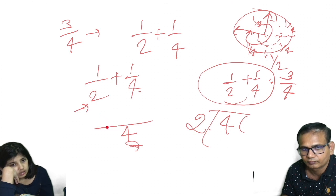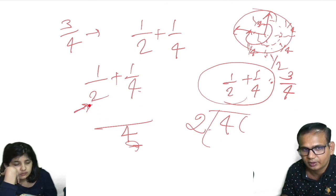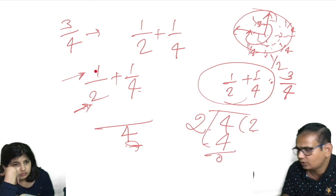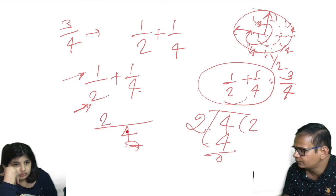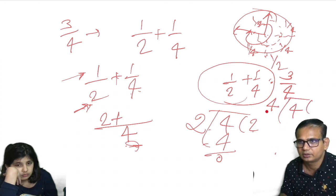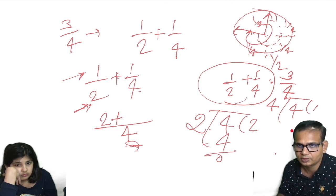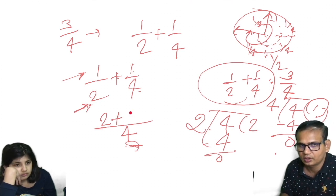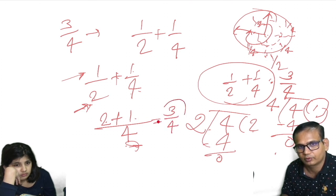We keep two here, then one here. Then two plus one is three, and three by four. That is the way we calculate it. Did you get this? Yes. Okay, so now you have understood.